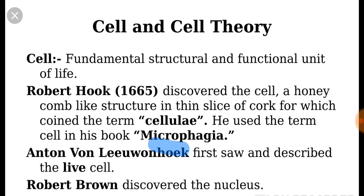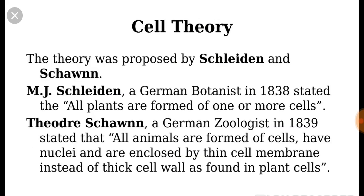Anton van Leeuwenhoek for the first time described the live cell. Robert Brown discovered the nucleus. Now let us move forward and have some discussion about the cell theory. The information about the cell was formulated in the form of a theory by two scientists — Schleiden and Schwann.